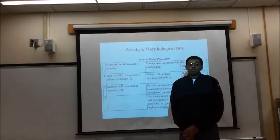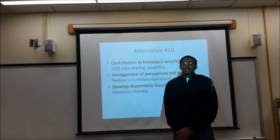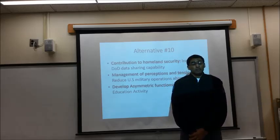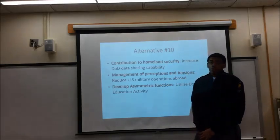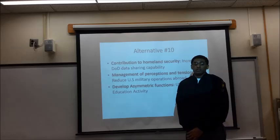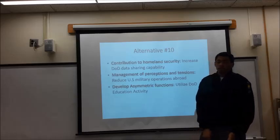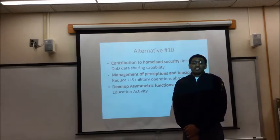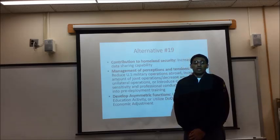My name is Cadet Kennedy Edwards, and I'll be presenting our alternatives based off of our morphological box. When coming up with our alternatives, we chose five that would best reduce the radicalization of the refugees, based off of our value model. Alternatives 10 and 11 provide one-dimensional alternatives that only include one method of addressing the solution design parameters — one option for each category — which provides a quick and easy approach.